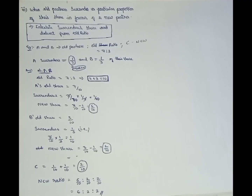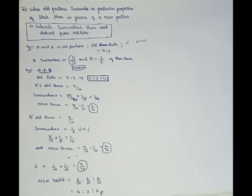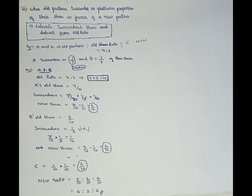B's old share is 3 by 10. B surrenders 1 by 3 proportion, so the surrendered amount is 3 by 10 into 1 by 3, which equals 1 by 10. So B's new share is 3 by 10 minus 1 by 10 equals 2 by 10. A surrendered 1 by 10 and B surrendered 1 by 10, giving C a total of 2 by 10.